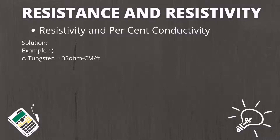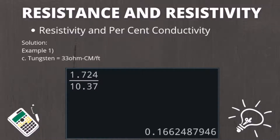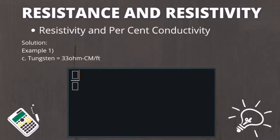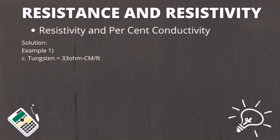Lastly, tungsten has a resistivity of 33 ohm circular mil over feet. The solution is 1.724 divided by 10.37 multiplied by 33, resulting in 5.5 micro ohm centimeter. Its percent conductivity is 1.724 divided by 5.5 multiplied by 100, which results in 31.4 percent. Notice that the lower the resistivity, the higher the percent conductivity, and vice versa.